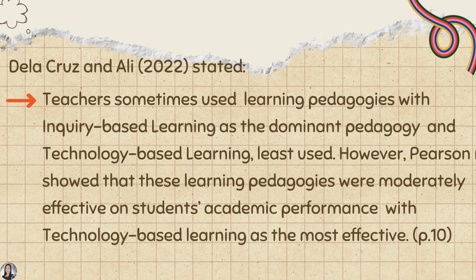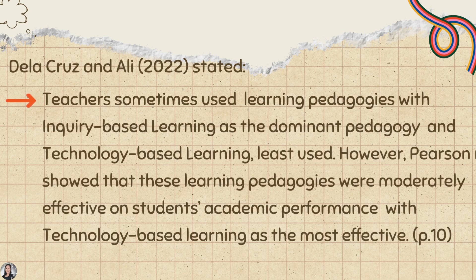Like this. Our long quotation here begins with 'teachers sometimes use learning pedagogies' — the whole paragraph of that is our long quotation, and it is indented 5 spaces. Starting from the letter D, count 1, 2, 3, 4, 5 — so the letter T in 'teachers' starts 5 spaces in. That is what rule number 2 means.